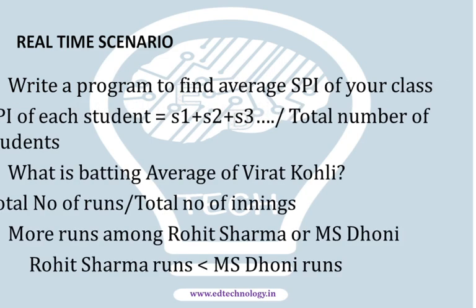Let us see. In the first program, what you have done is you have taken the SPI of each student in the class, totalled it up or added it up, and then divided by the number of students in the class. In the second question, you actually calculated the number of runs divided by number of innings — and yes, cricket lovers will tell me only innings where he got out. That is correct.